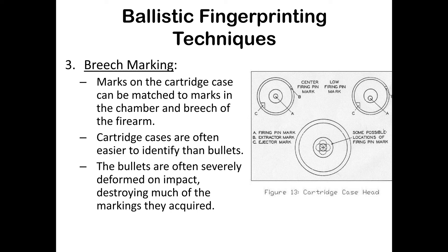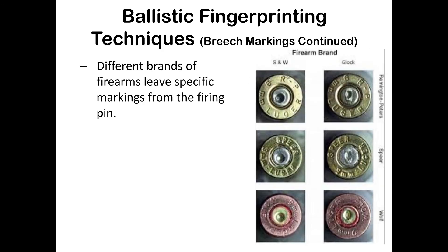The chamber and the breech of the firearm are going to mark these cartridges. This is actually easier to identify than bullets — bullets fly faster than the speed of sound and smash against things getting deformed, while cartridge cases just fall and hit the ground. Different brands of firearms leave specific markings from the firing pin, which is another class characteristic. On the left you see Smith & Wesson firing pins, and on the right, Glock firing pins.